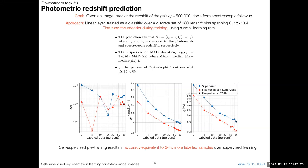Perhaps more interestingly, if you take a constant y-value and look along the x-axis: with 2% of the labeled data we achieve what was possible with 5% in a supervised setting, or with 10% we achieve what was possible with 30% of the labeled data. So if you're in a setting where labels are hard to come by — such as crowdsourcing or spectroscopic follow-up which takes years or decades — by simply doing self-supervised learning first, you can get the equivalent result as if you increased your labeled dataset by a factor of two to four.